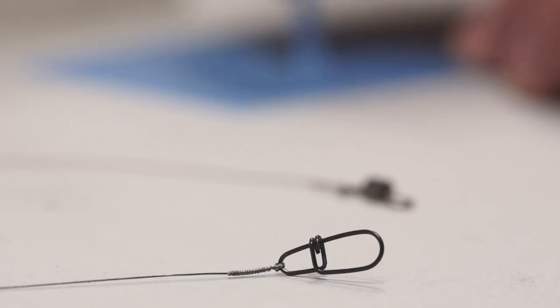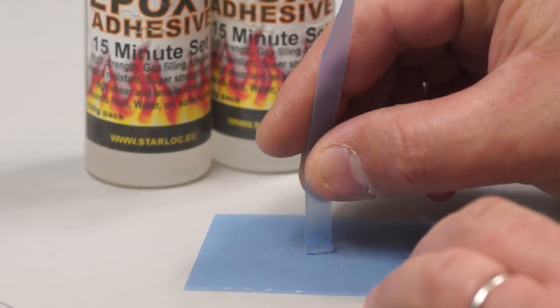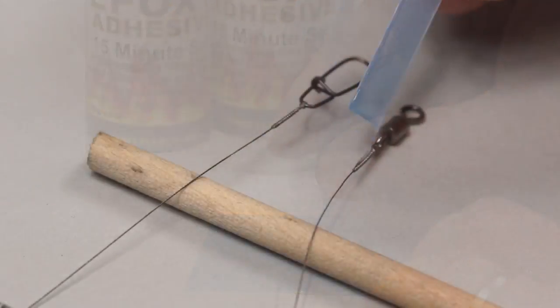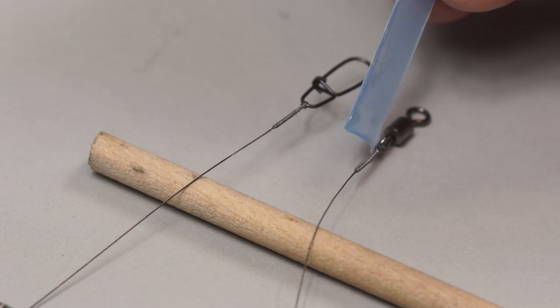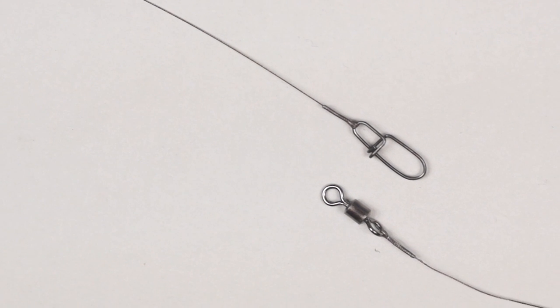With both ends twisted I can mix up some of the epoxy and apply just enough to lightly coat the wraps. A quick alternative I use bank side is super glue.